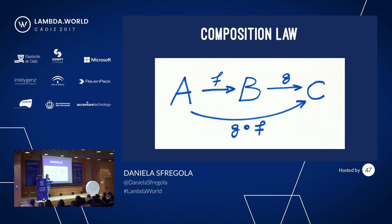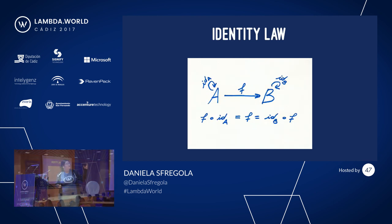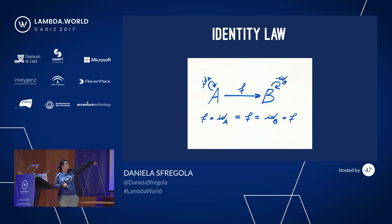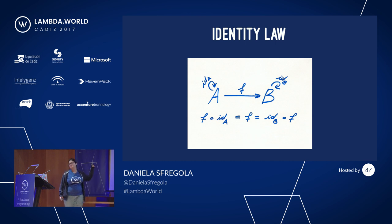There are some laws that are the rules of our game. The first rule is the composition law. It basically means that if we know how to go from A to B and from B to C, then we automatically know how to go from A to C by composing the two arrows together. I'm going to go quickly on this because I know we've seen it.